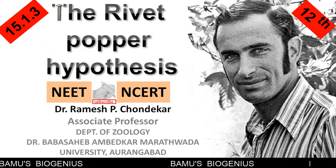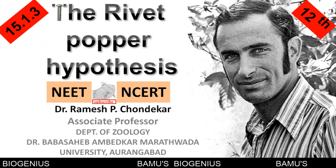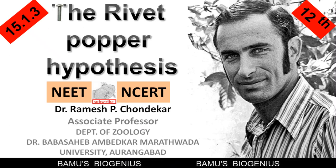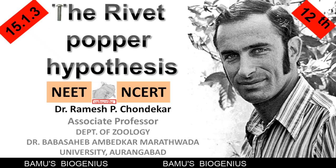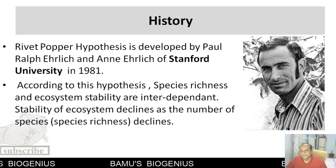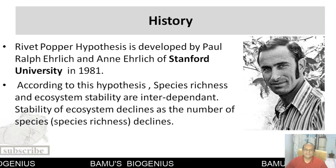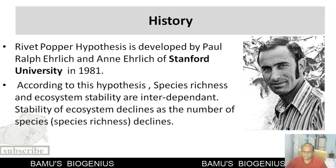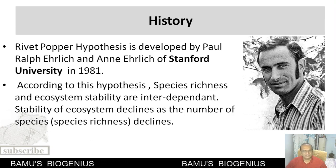Hi friends, welcome to Bamooj Biogenius. Today we will discuss the Rivet Popper Hypothesis. This topic is included in NCERT Biology book, class 12, point number 15.1.3. This hypothesis was developed by Paul Ralph Ehrlich and his wife Ann Ehrlich of Stanford University in 1981.